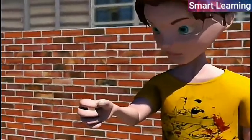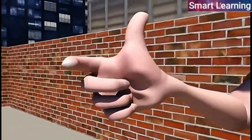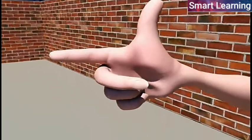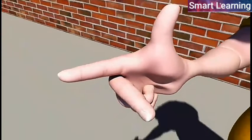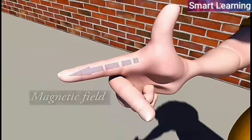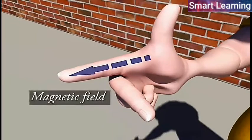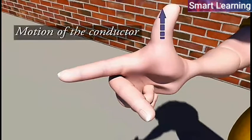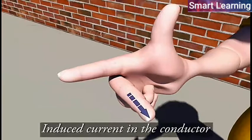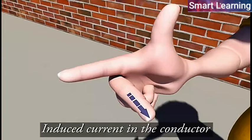It states, stretch the thumb, the index finger and the middle finger of the right hand so that they are mutually perpendicular to each other. If the index finger points in the direction of magnetic field and the thumb points towards the direction of motion of conductor, then the middle finger shows the direction of induced current in the conductor.